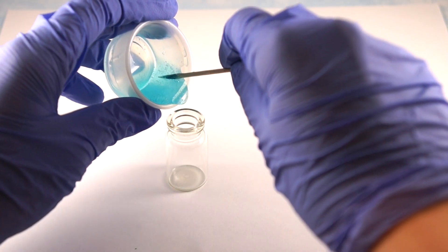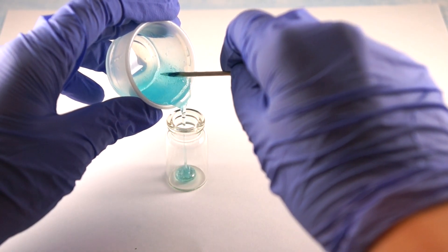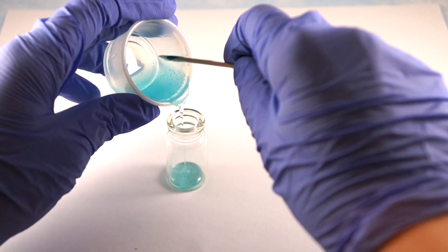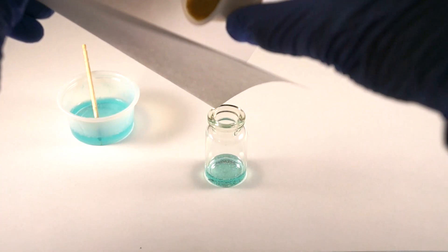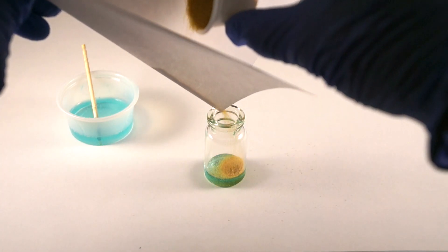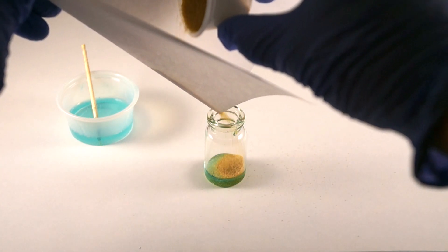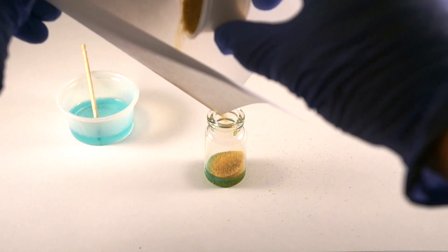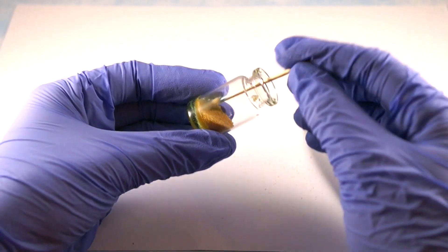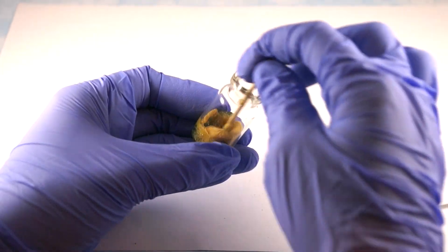Pour a little bit of the resin into the bottle so you can add your sand. Stir the sand around a little so it becomes moist.